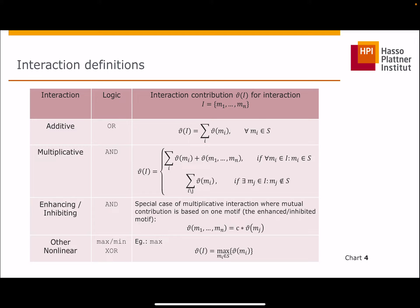Here, we define interactions with respect to the contribution to the outcome. An interaction consists of at least two motives, and we separate between individual contributions from single motives and mutual contributions when motives are interacting. For example, an additive interaction consists of individual contributions and does not have a mutual interaction contribution. In multiplicative interactions, all motives need to be present in a sequence, so that beside the individual contribution, the motives also mutually contribute.